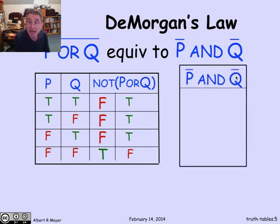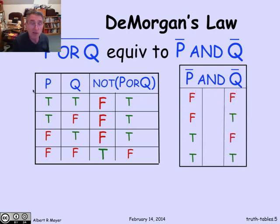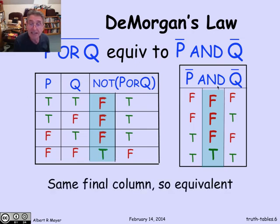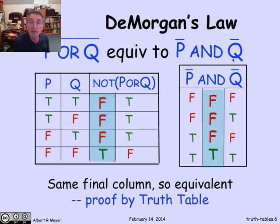Now let's do the same thing for not p and not q. We fill in the values of not p and not q — not p is the flip of the p column, and not q is the flip of the q column. Then we fill in the values of the 'and', which is true only when both are true, and otherwise false. The possible truth values of the first formula, not (p or q), in all possible environments are exactly the same as the possible truth values of not p and not q. The columns are the same, and that means these two formulas are equivalent — that's the proof by truth table.